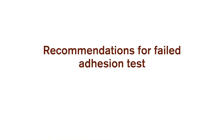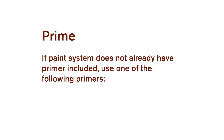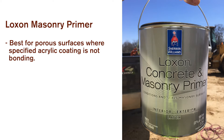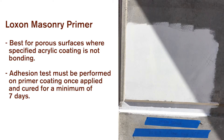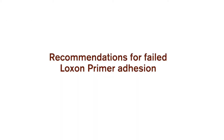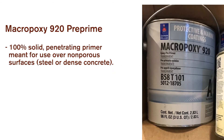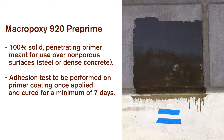If the adhesion test fails, prime. If the paint system does not already have a primer included, use Loxon masonry primer, which is best for porous surfaces where the specified acrylic coating is not bonding. An adhesion test must be performed on the primer coating once applied and cured for a minimum of seven days. If the Loxon primer also fails adhesion, the next step is Macropoxy 920 Preprime — a 100% solid, penetrating epoxy primer meant for non-porous surfaces such as steel or dense concrete. Adhesion testing must again be performed once applied and cured for a minimum of seven days.